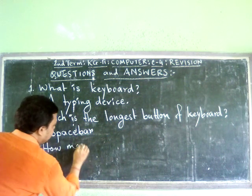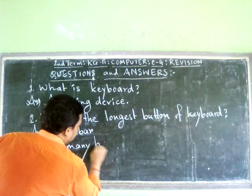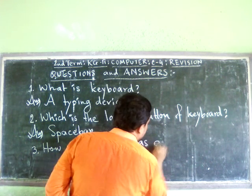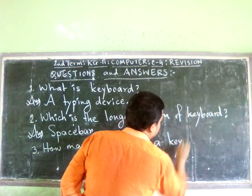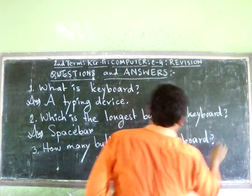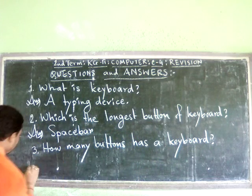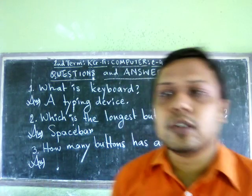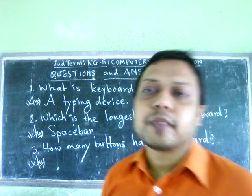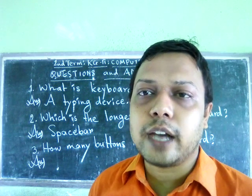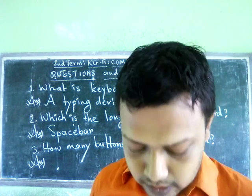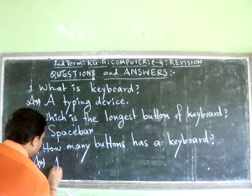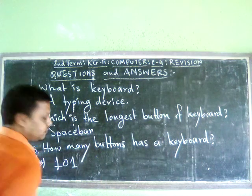How many buttons does a keyboard have? We all know that generally a keyboard has 101 keys, and we have read this in our textbook. So the answer is: a keyboard has 101 keys.